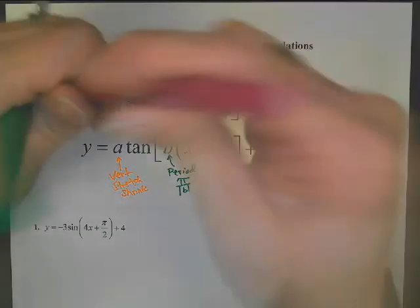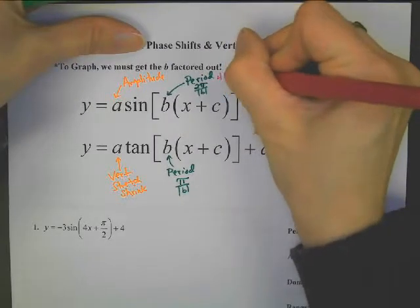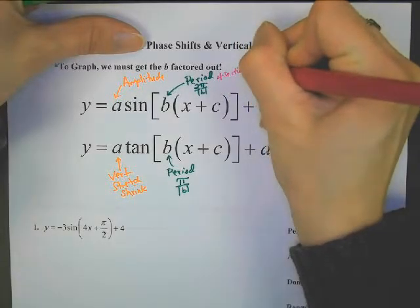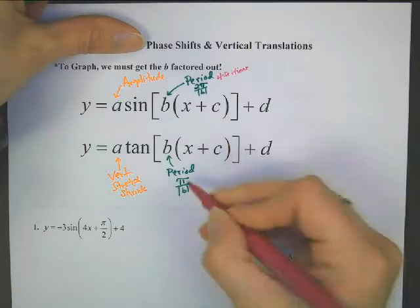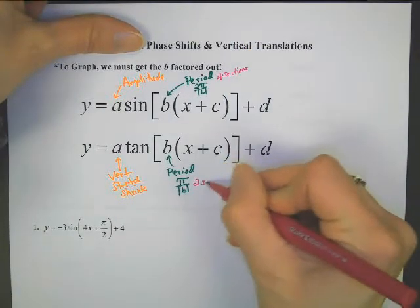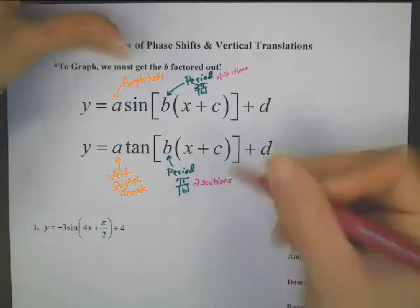A little note here: for sine and cosine there are four sections you'd divide up by two, but for tangent and cotangent there'd only be two sections.